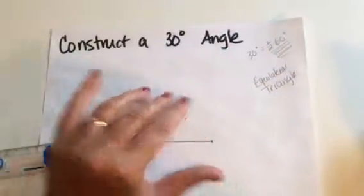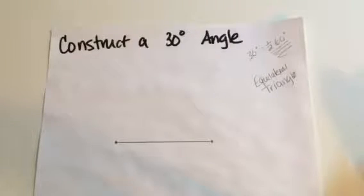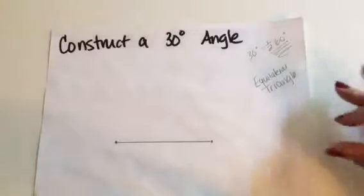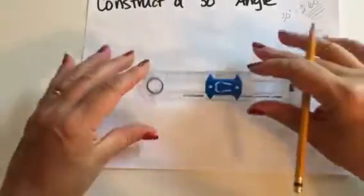So first I'm going to do the construction of an equilateral triangle, which is going to give me three 60-degree angles. Then I'm going to do an angle bisector construction to bisect each of those 60-degree angles into 30. So if you remember the equilateral triangle construction,